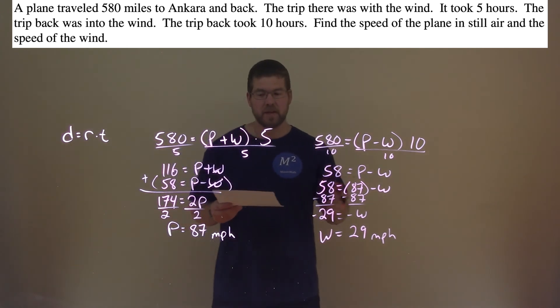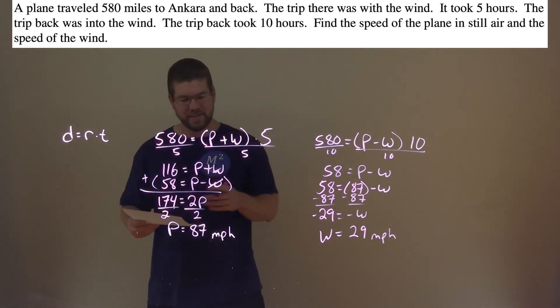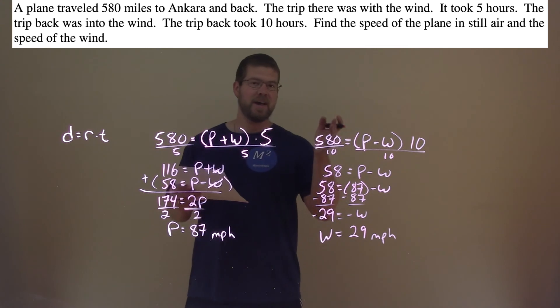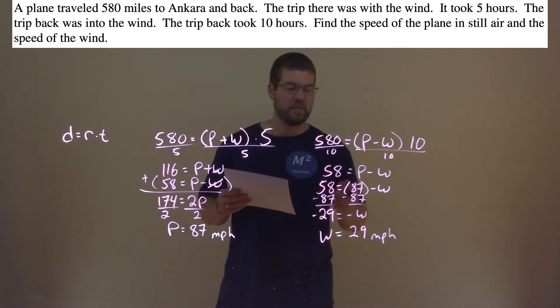So we have a final answer. The speed of the plane in still air, 87 miles per hour, and the speed of the wind is 29 miles per hour.